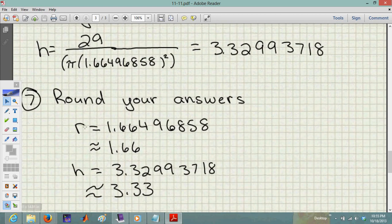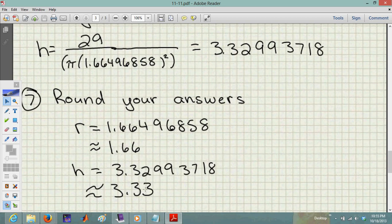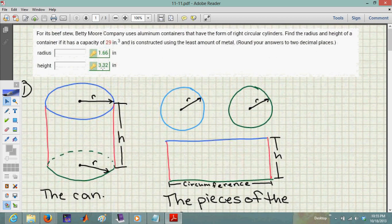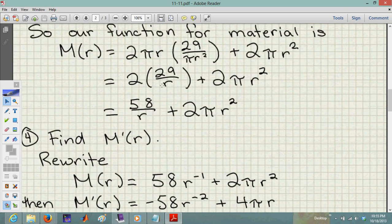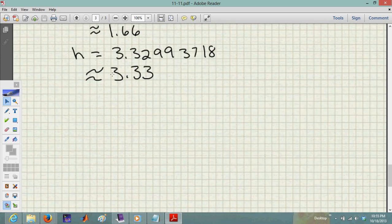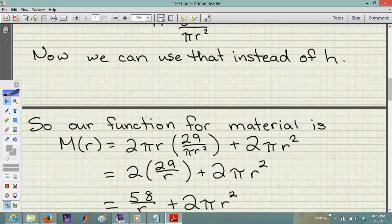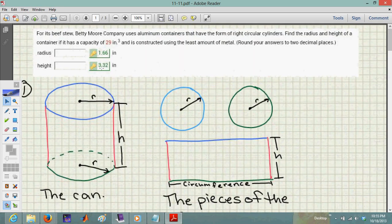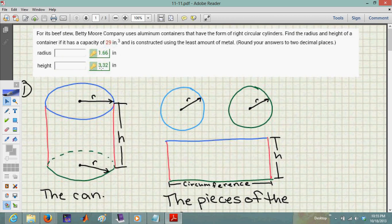Now we round. The radius rounds to 1.66, and the height rounds to 3.33. WebAssign's answer shows 3.32, but WebAssign has flexibility built in for rounding differences, so it will accept 3.33 as a correct answer.